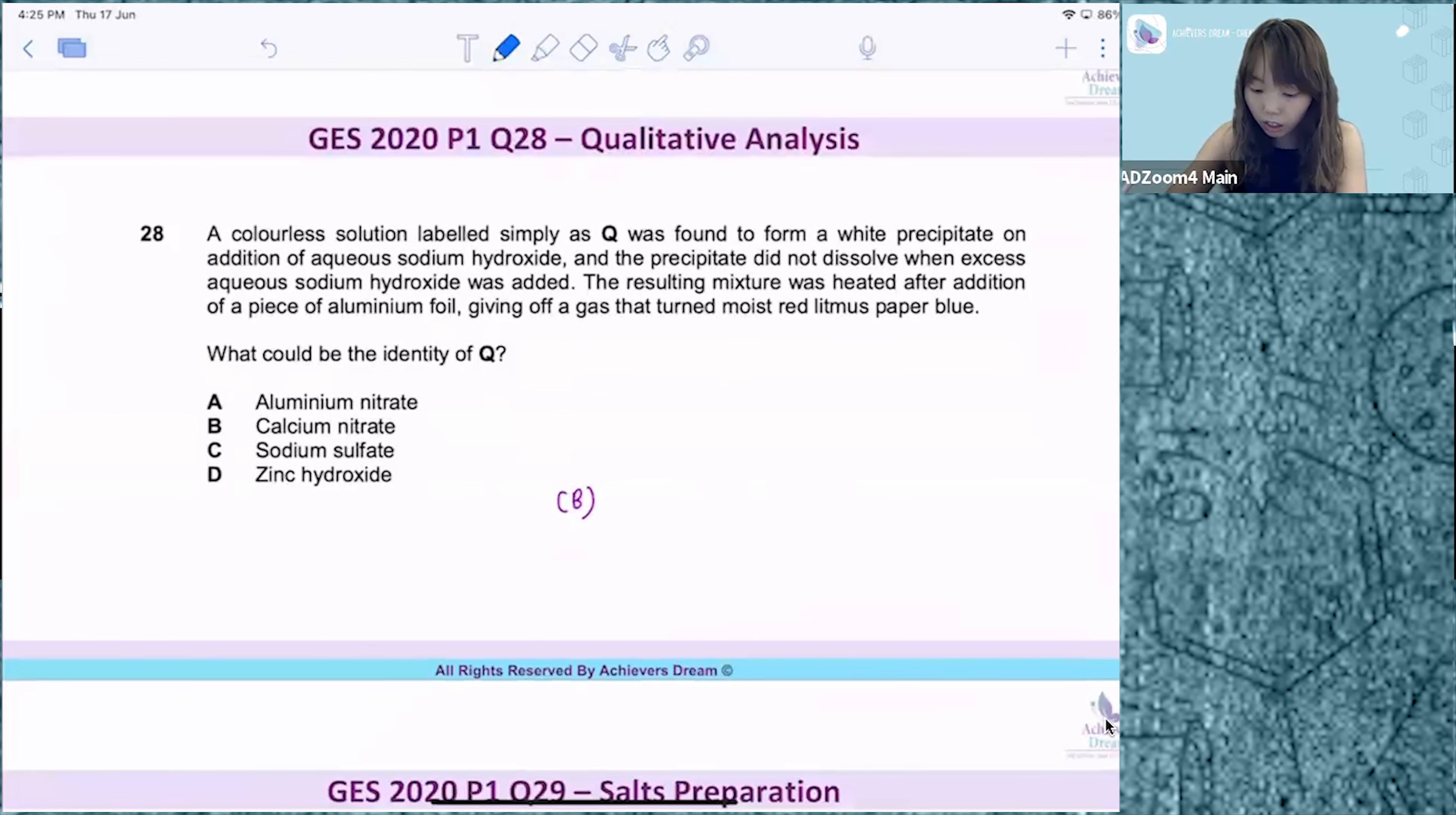Then for Q28, a colorless solution labeled as Q was found to form a white precipitate upon addition of aqueous sodium hydroxide, and this white precipitate did not dissolve in excess NaOH.